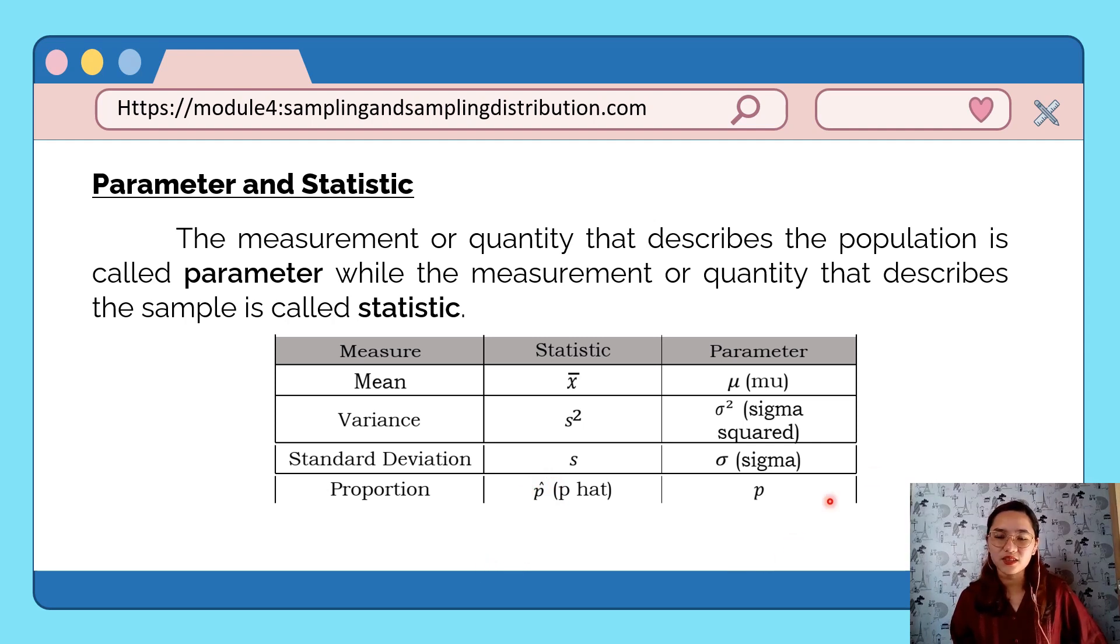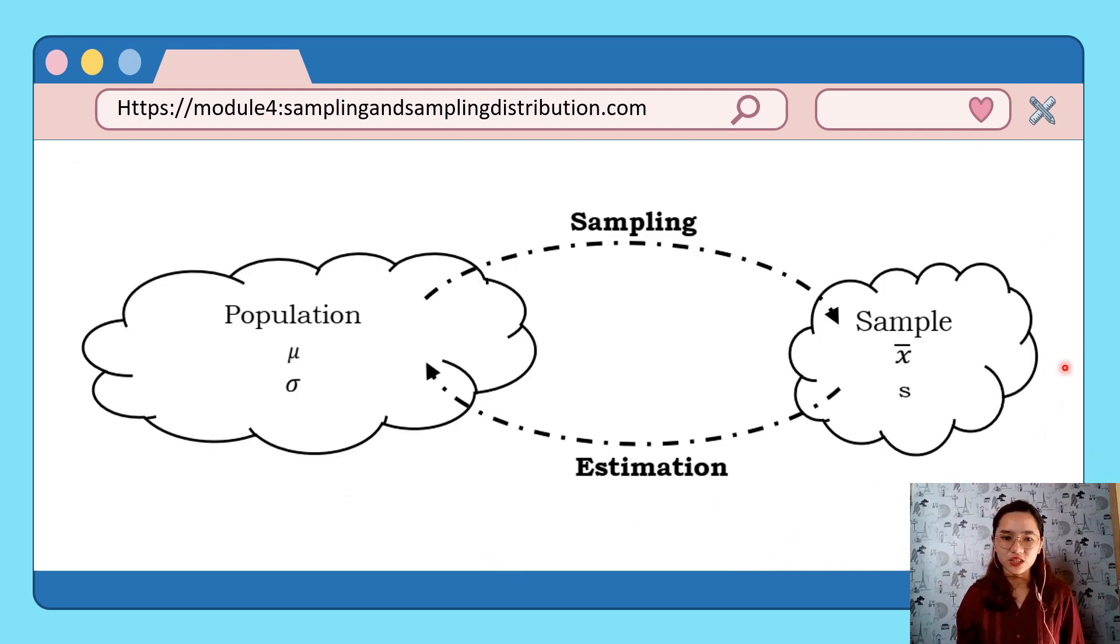Observe this illustration. As you can see, when you want to take a sample and obtain sample statistics from the population, that is what we call sampling. While when you want to use sample data to determine the population parameter, that is what we call estimation. We will learn more about estimation in the next part. For this module, let's focus on our sample data.